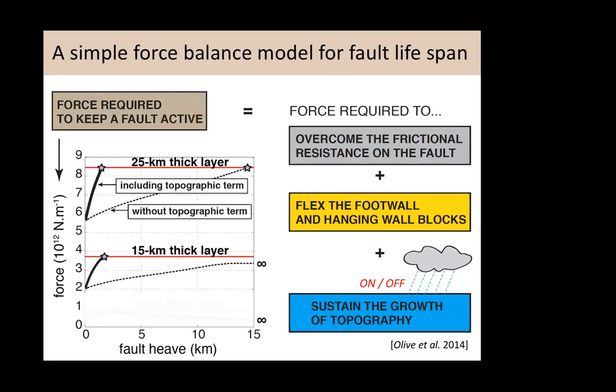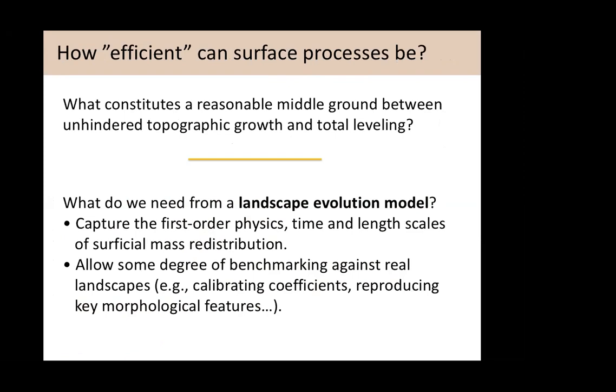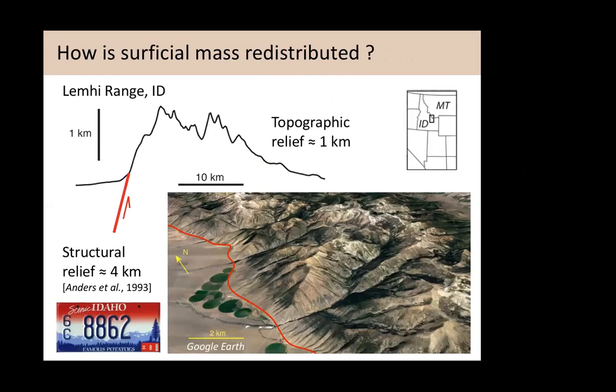That's a normal fault in a vacuum with perfect surface processes that either takes topography on or off. The next question is: what's a realistic rheology — it's not just perfectly elastoplastic — and what on Earth is a realistic efficiency for surface processes? What's a reasonable middle ground between leveling all topography and conserving all topography? This goes back to the discussion of what we actually need from our landscape evolution models and what's really important to capture — something I'll get into with the example of rifting models.